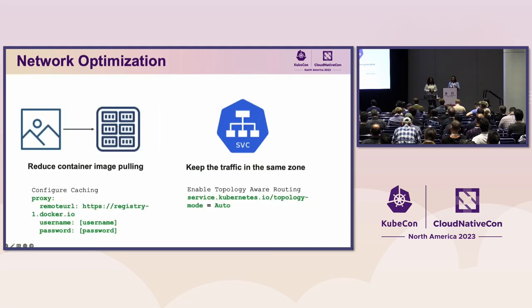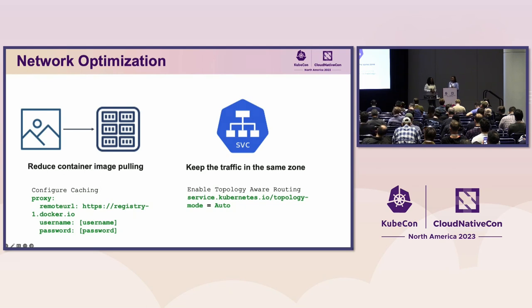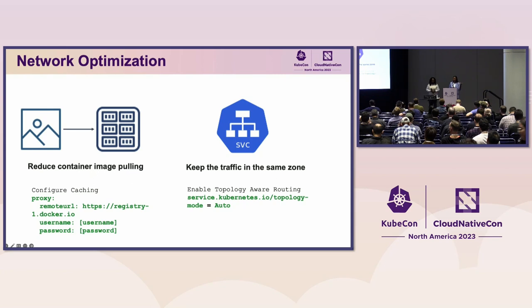Another area is network optimization. Most cloud providers charge some kind of data transfer cost. Networking costs seem small with small clusters, but if you have many developers pulling images all day, those are costs you're incurring without even thinking about it. Think about caching your images, especially the latest ones you'll be using often — that will help you save on those costs.